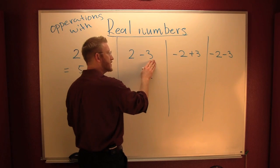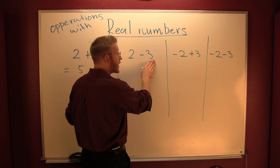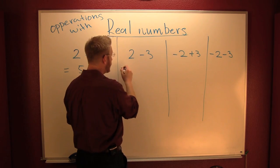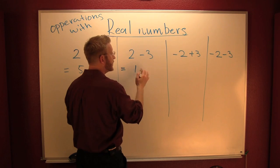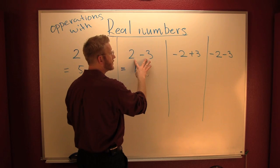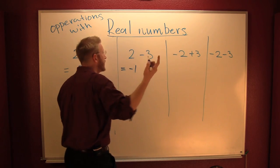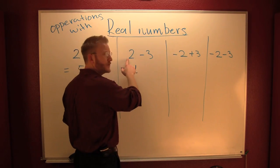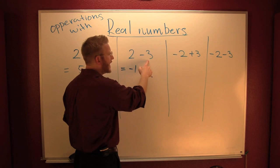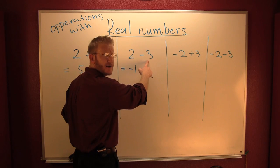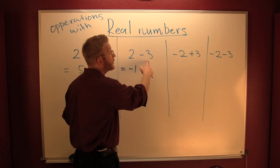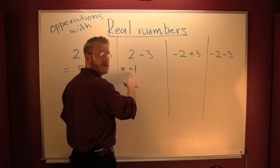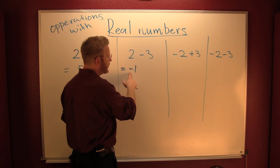Here these have opposite signs, so what do we do? We subtract. Can I take two from three? Yes. And what do I get? I get one. Now which one's bigger? The three is bigger, so this is going to be negative. The way I see it, you have two good guys. Three bad guys come along. They fight. Who wins? The bad guys. How many do they win by? They win by one. So you got one bad guy left.